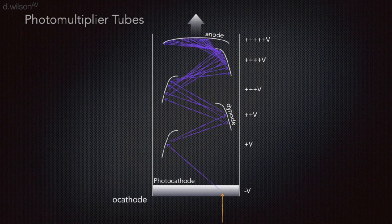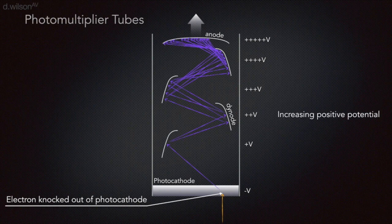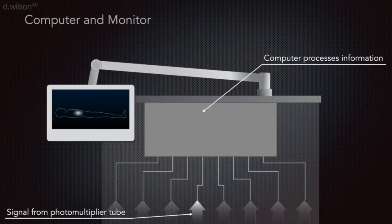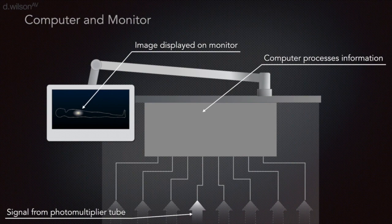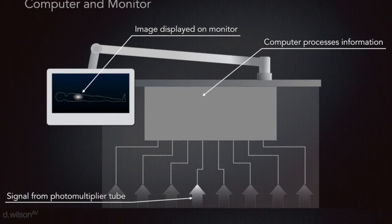The signals from the photomultiplier tubes go through an analog-to-digital converter and then to a pulse-height analyzer. This device detects the intensity of the signal, and thus the energy of the incident-absorbed photons, and uses only photons from the radionuclide when forming the final image.